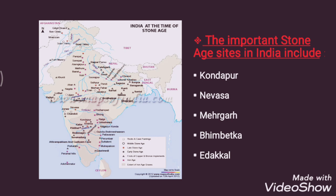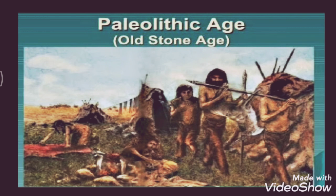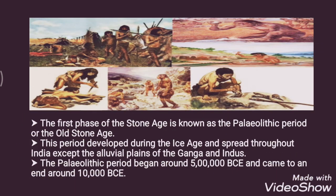The first phase of the Stone Age is known as the Paleolithic Age, or the Old Stone Age. The Paleolithic Age was developed during the Ice Age and was spread throughout India except the Alluvial Plains — that is, the Ganga and the Indus plains. The Paleolithic period began around 500,000 BCE and came to an end around 10,000 BCE.